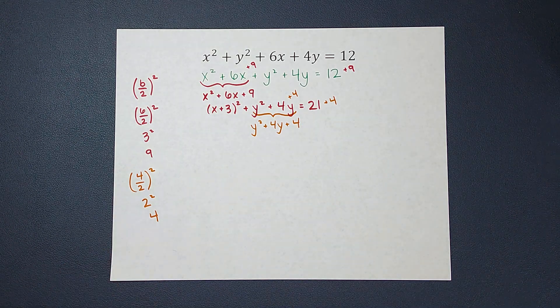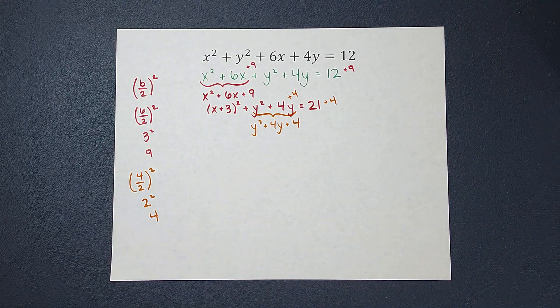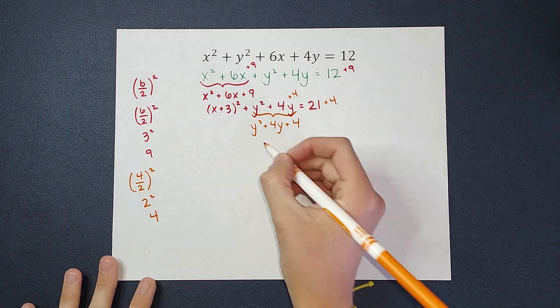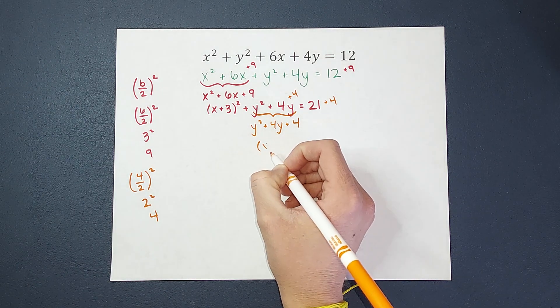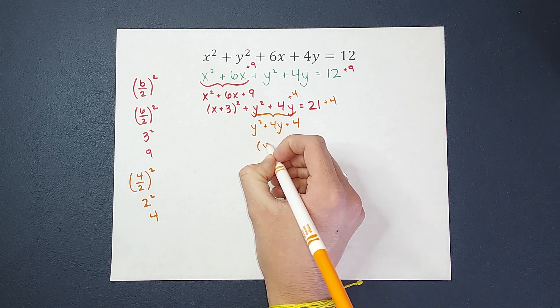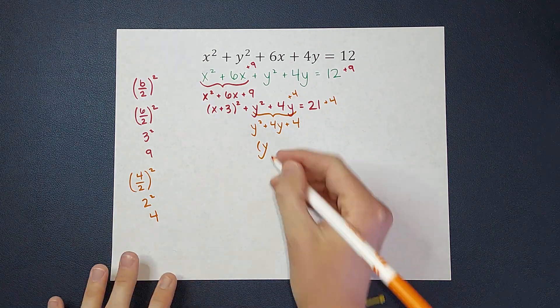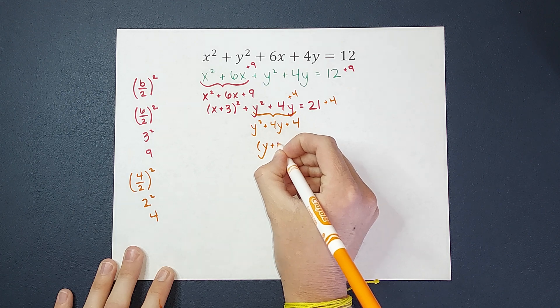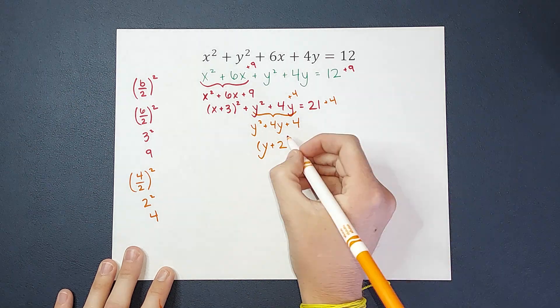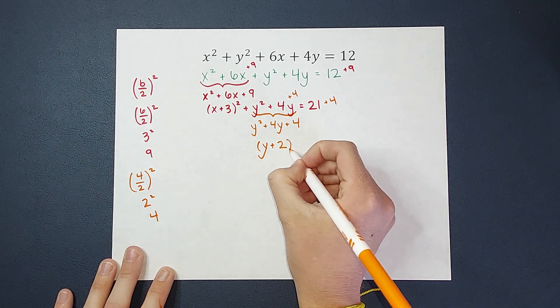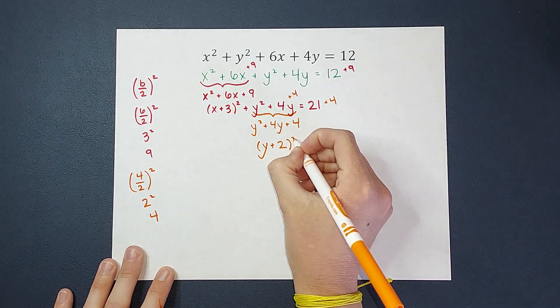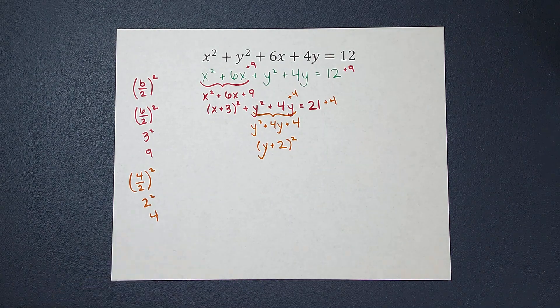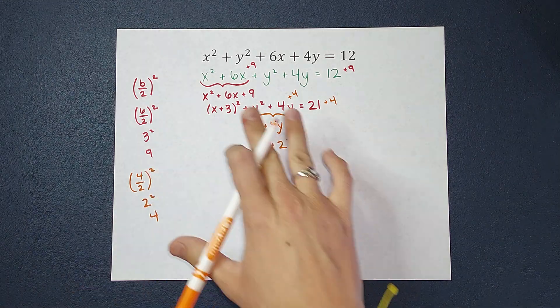So now I've got y squared plus 4y plus 4. When I factor that, I get x plus 2, not, oh my gosh, I do that every time, you guys. Not x, y. Y plus 2. Sorry, I'm laughing because I've done that like 12 times. Y plus 2 times y plus 2, which I can just write as y plus 2 squared. So there's my y's. I'm going to rewrite my x's.